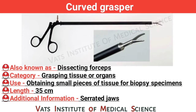Curved grasper, also known as dissecting forceps. Category: grasping tissue or organs. Use: obtaining small pieces of tissue for biopsy specimen. Length: 35 cm. Additional information: serrated jaw.